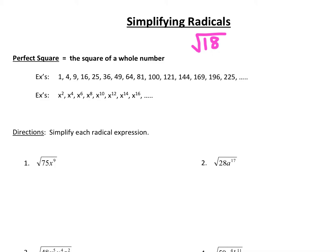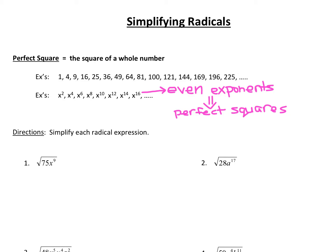Now before we do, I just want to point out, as far as variables go, all of these listed here are perfect squares. And what you might notice is that all of their exponents are even. So as long as a variable term has an even exponent, it is a perfect square. So take a minute and write that down in your notes — all of these have even exponents, and as long as an exponent is even, the term itself is a perfect square.